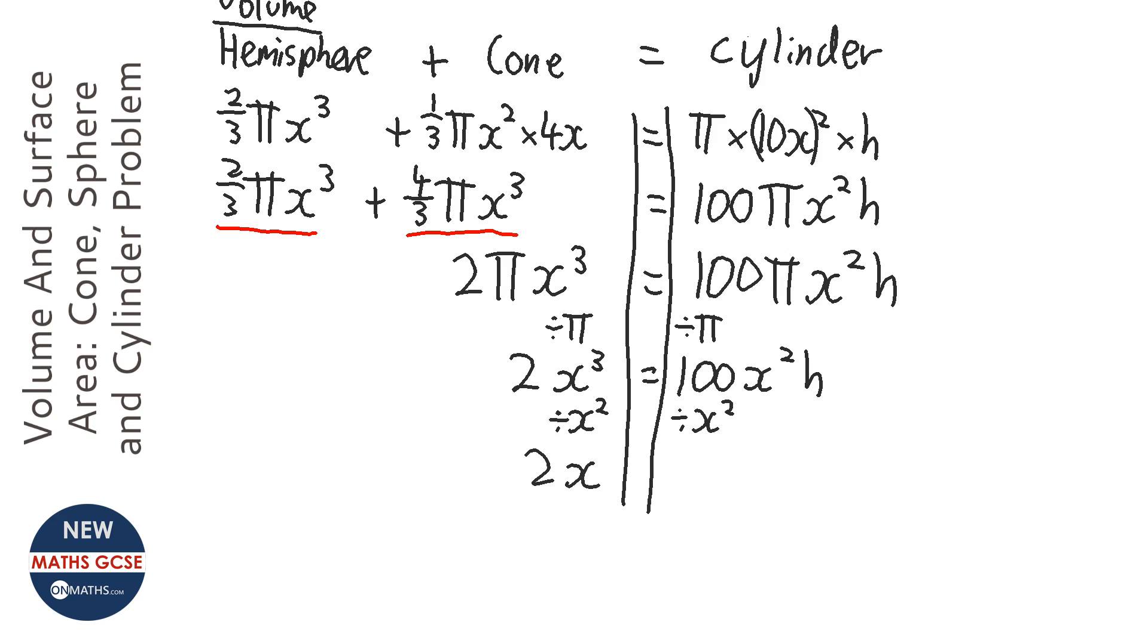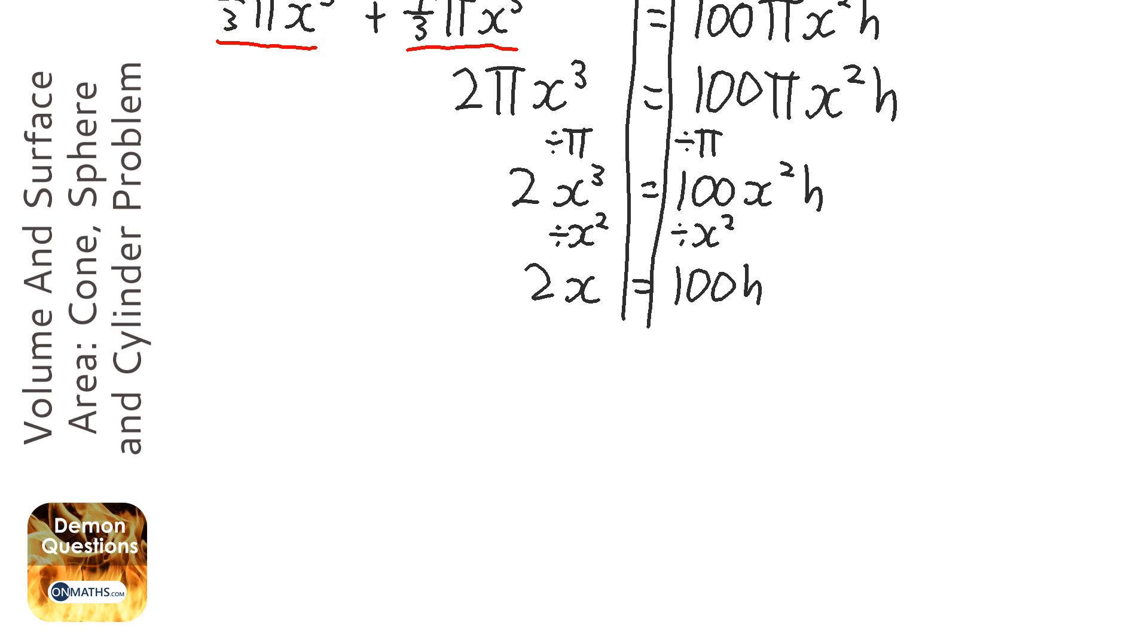So we get 2x equals 100h. So we can already see we're really close. So to get h on its own, we need to divide both sides by 100.